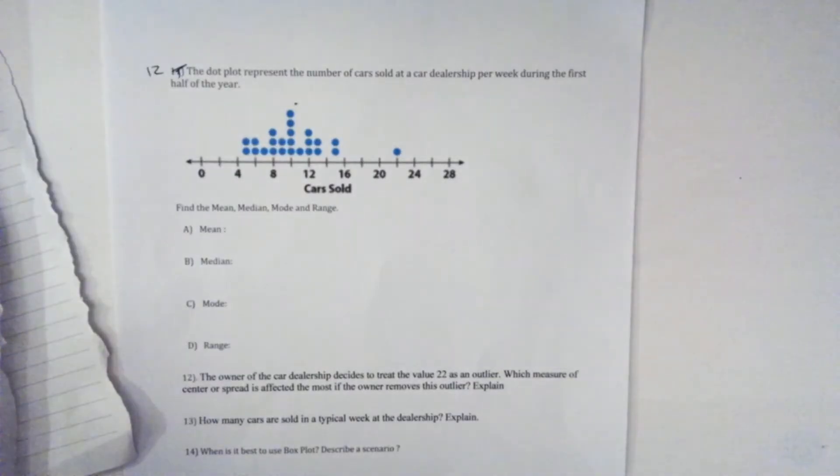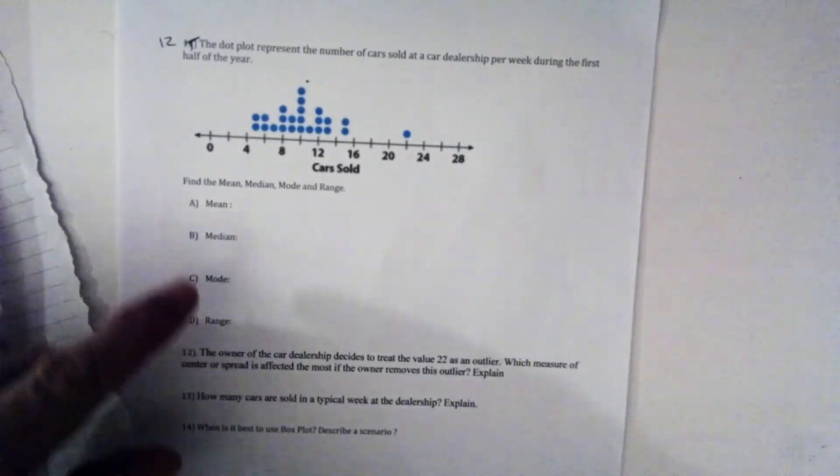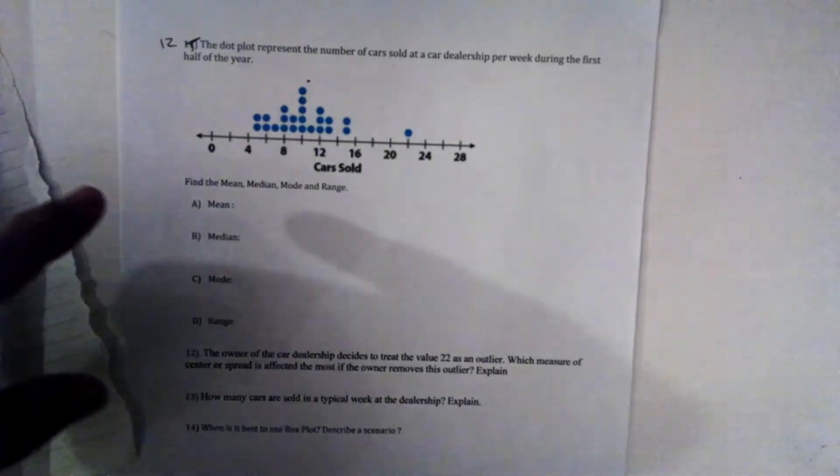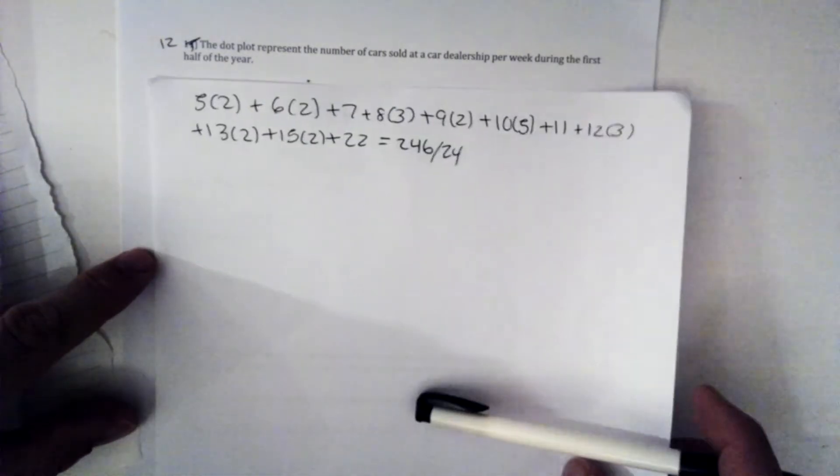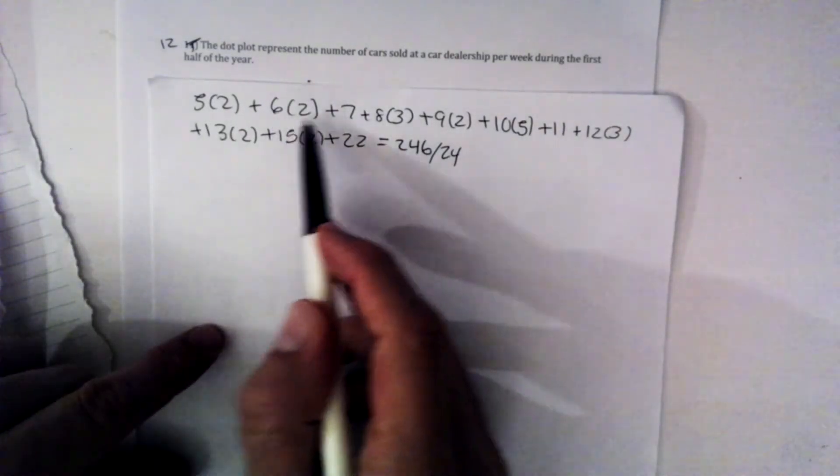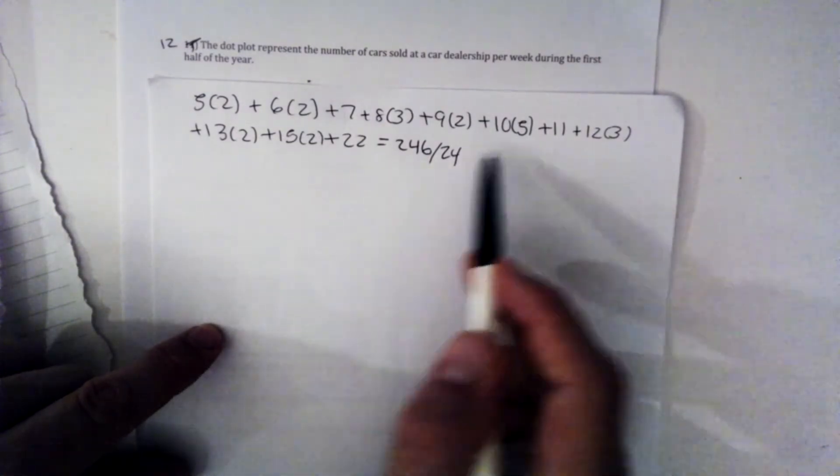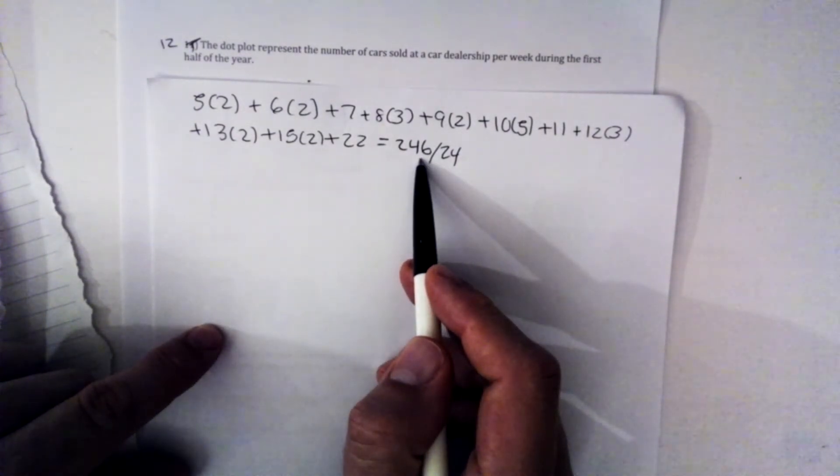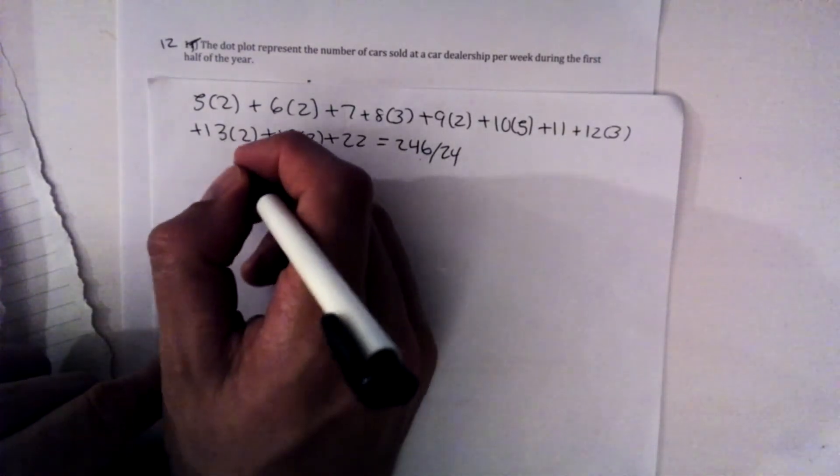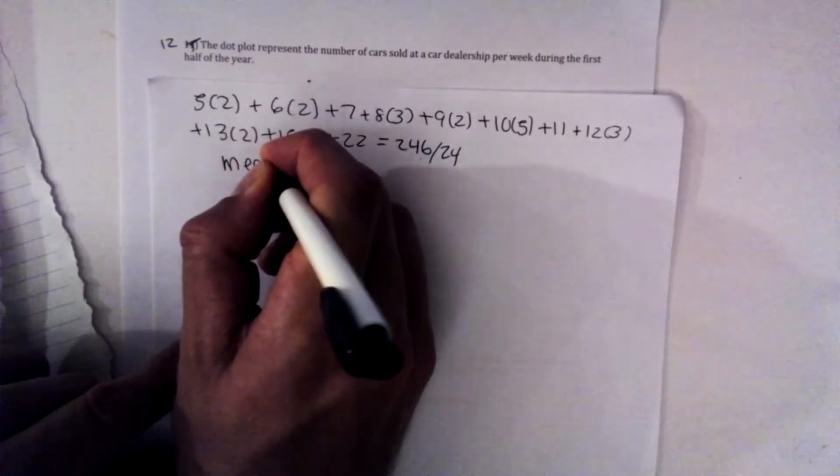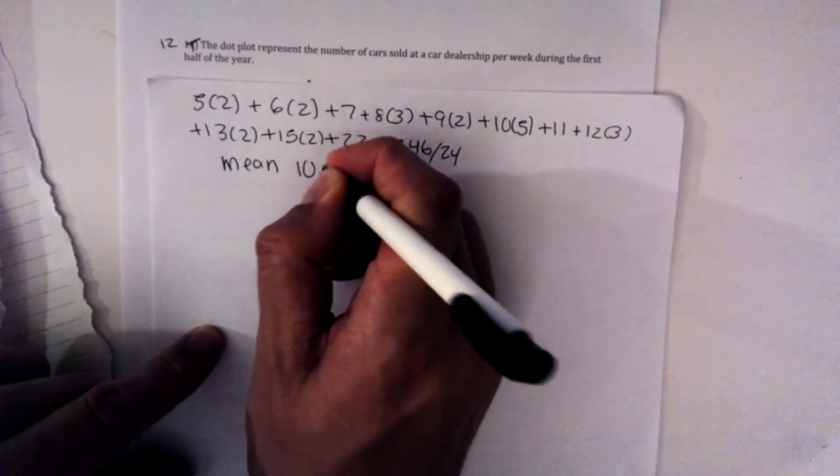Number 12. The dot plot shows represents the number of cars sold in a dealership per week during the first half of the year. So we want to find the mean of this data here. So the mean here, if I were to write all these numbers out, I get this. And I get a total of 246. When I divide that by the total number of numbers, I end up with a mean of 10.25.